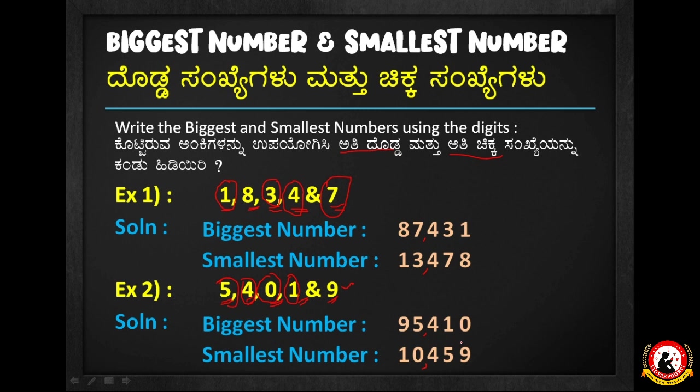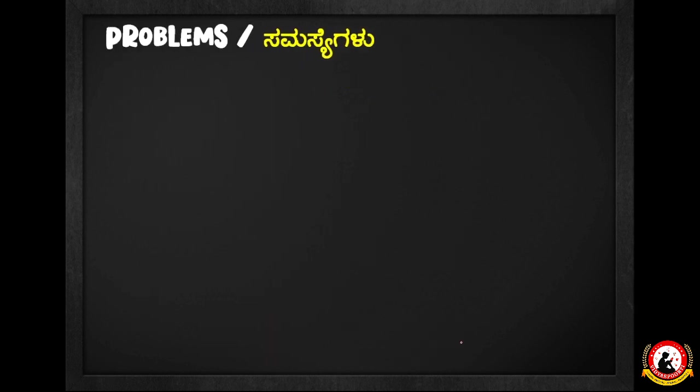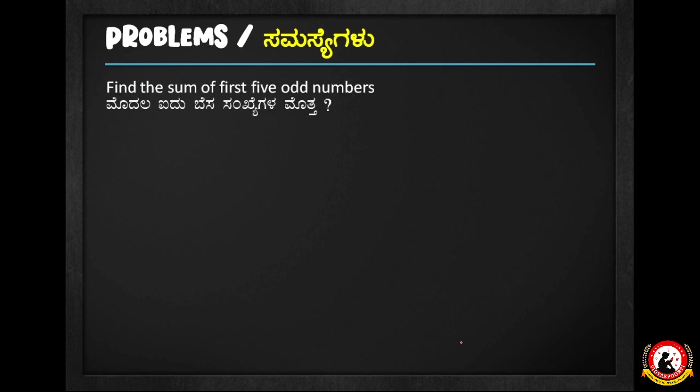So at this point, the smallest number is 10,459. If you need to use digits 0, 1, 4, 5, 9, the smallest 5-digit number is 10,459 because 0 cannot be the leading digit.